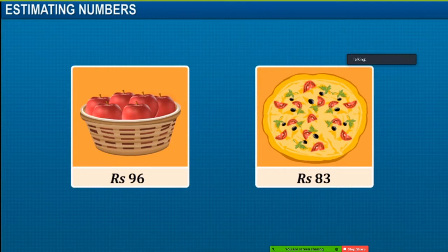So here we can say that 96 is rounded off to the nearest tens, which in this case is 100. While 83 is rounded off to 80, which is the nearest tens.